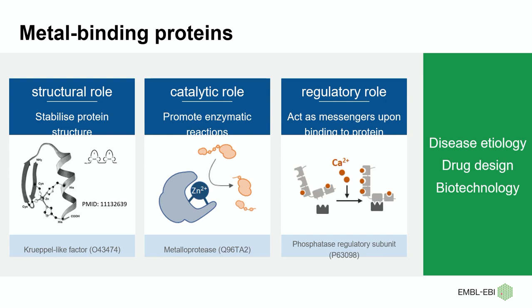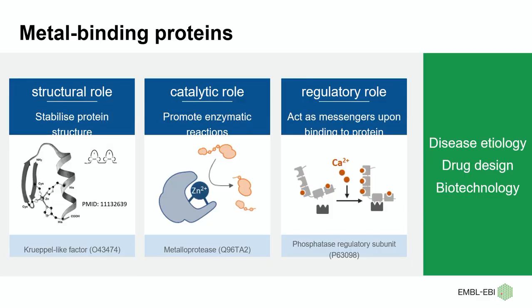Why did we focus on the annotation of metal-binding sites? Metals play essential roles for proteins by stabilizing their structure, promoting enzymatic reactions, and acting as messengers upon binding to proteins. Knowing the position of metal-binding sites is important for disease, as many variants affect these binding sites. It is also important for drug design — especially for enzymes — and in the biotechnology field.